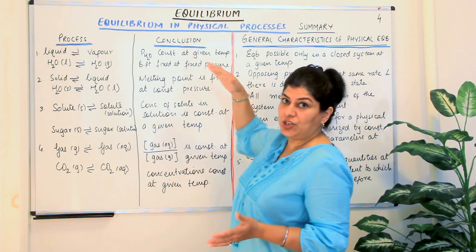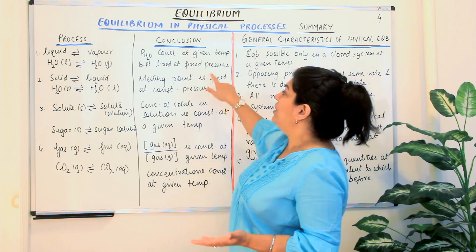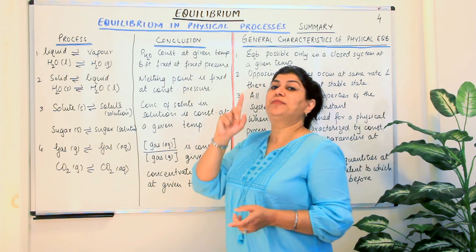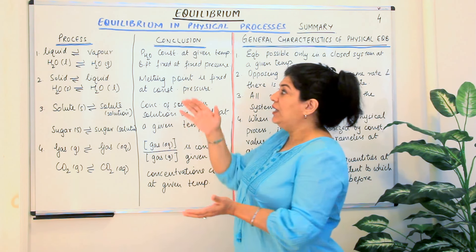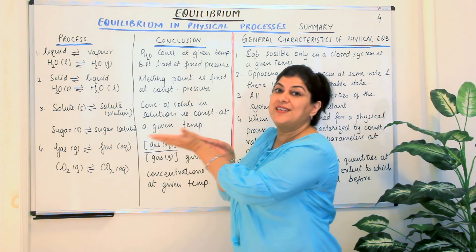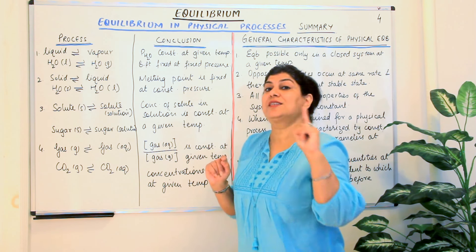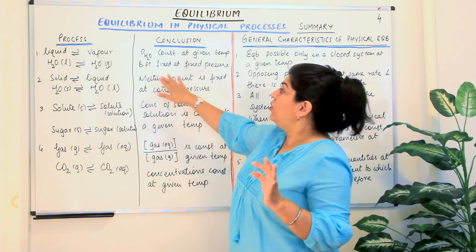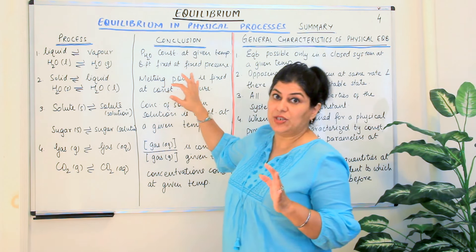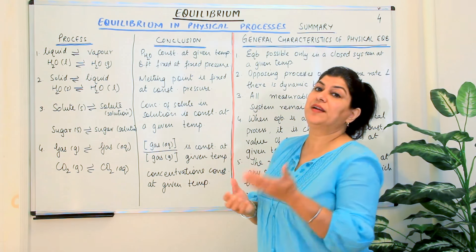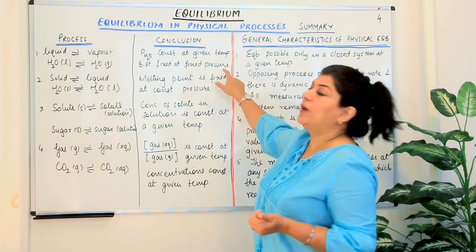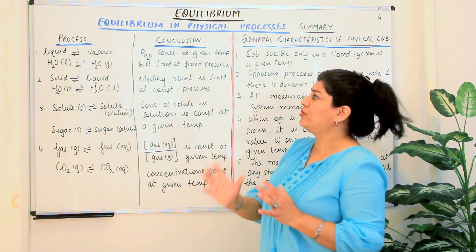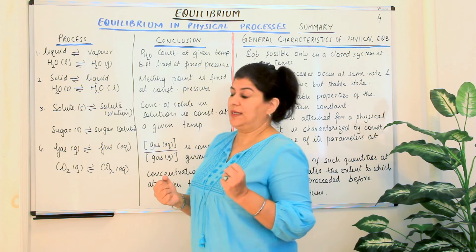If we keep the pressure to be the atmospheric pressure — at one atmospheric pressure — an equilibrium between the liquid state and the vapour state is established at a certain temperature. That certain temperature is known as its boiling point. Substances have a fixed boiling point, existing at equilibrium in their liquid and vapour state at one atmospheric pressure.